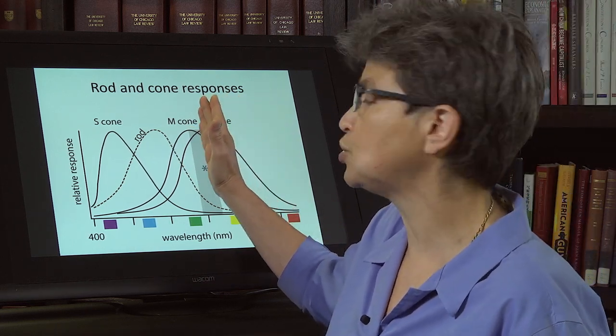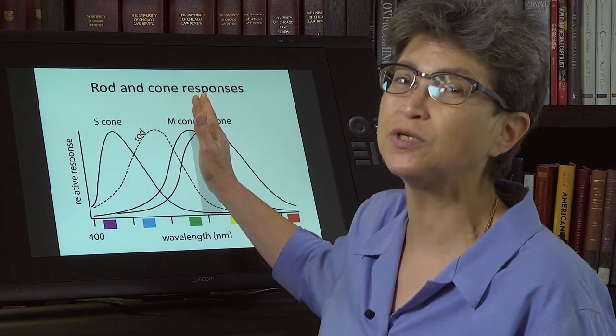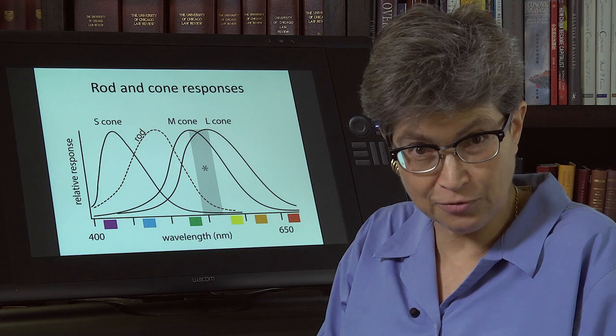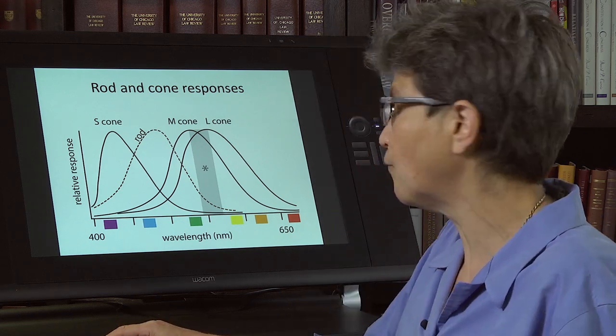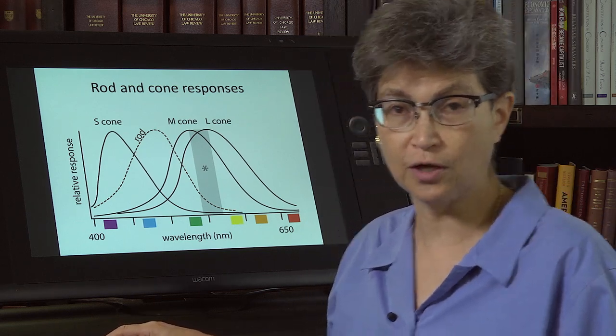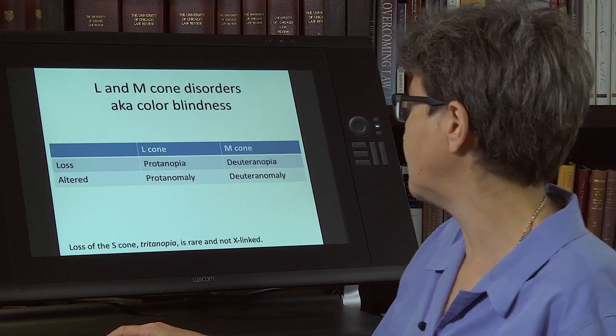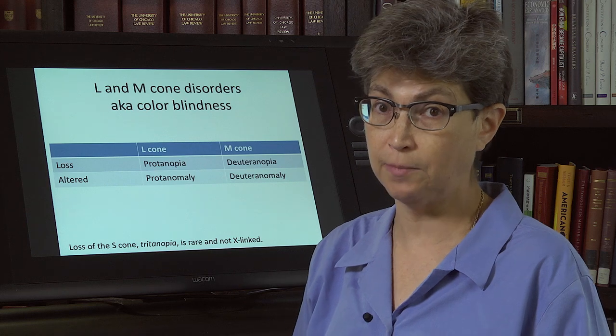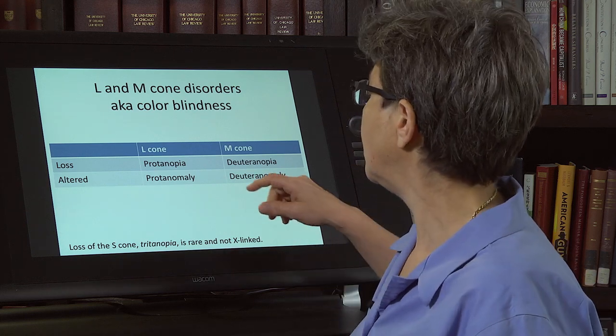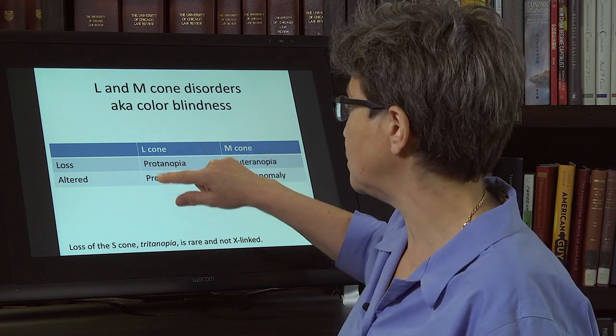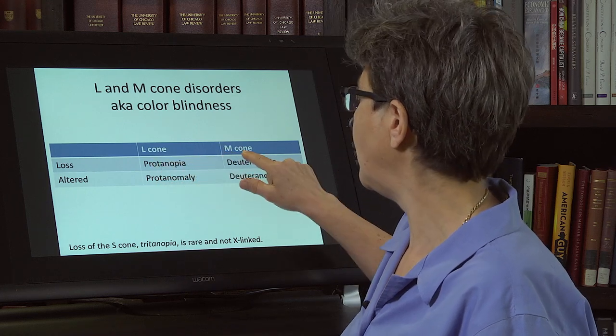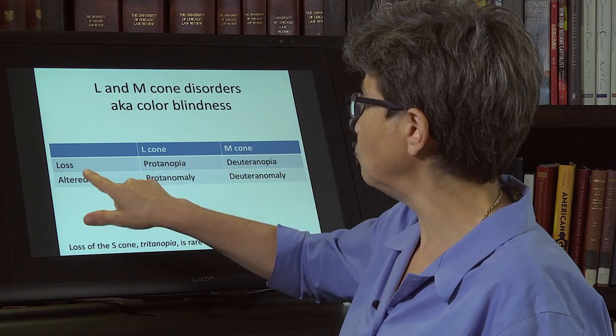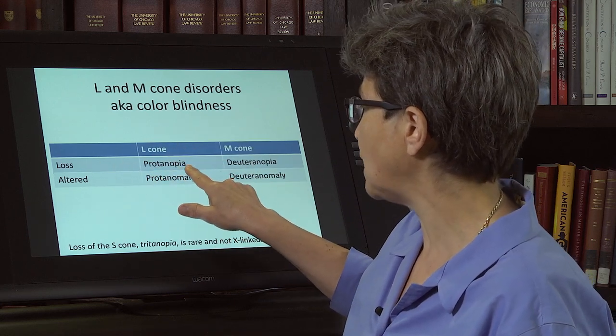And if one of these cones were so shifted so that it was even more similar, then it's really, it's not providing me with enough distinguishing information to tell red from green. And so there are four different types of color blindness that are common that are all X-linked. So all much more common in men than women. The L cone was the first gene. So it's the pro and M is the deute. It's the second one. If you lose it, you have a protanopia.